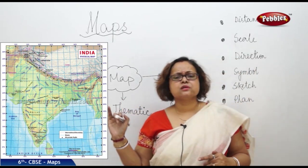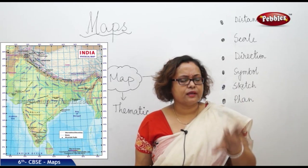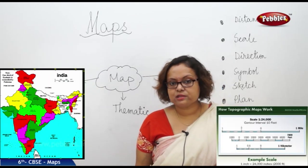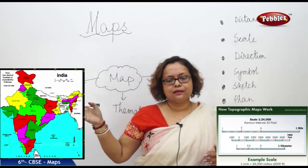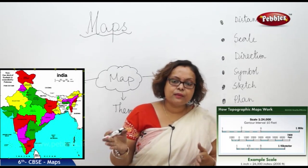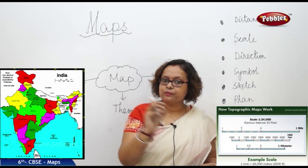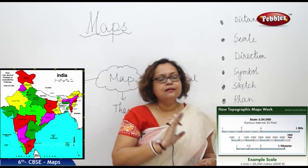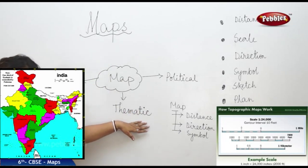Next we are coming to the thematic map. A thematic map can be of different purposes. For example, what is the population of Hyderabad, or how many people are there in Uttar Pradesh — a population map can show that. Or how rainfall differs between Meghalaya and Rajasthan — that can also be shown. We call it a thematic map because it is based on a theme. The theme can be population, the theme can be climate. Maps based on such themes are known as thematic maps.